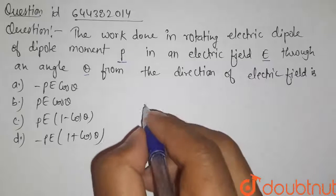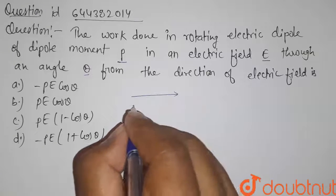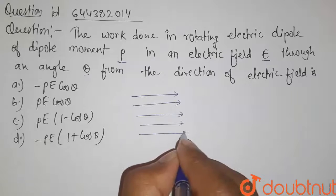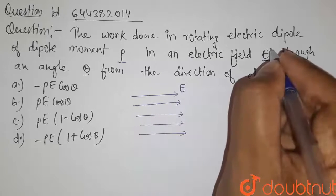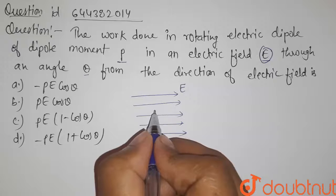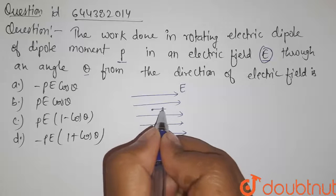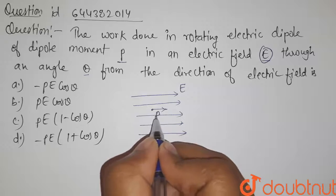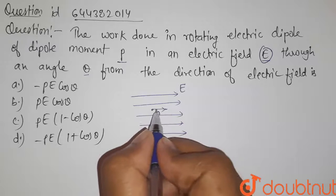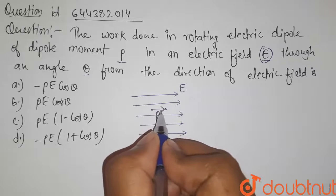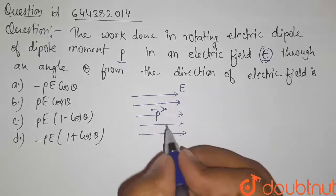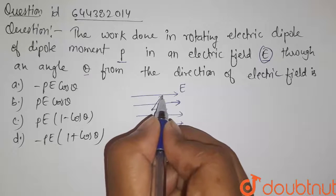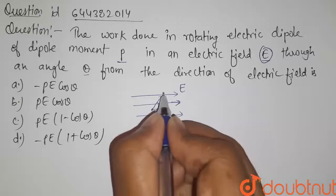So let us try to understand this. Suppose this is the direction of the external electric field, and its magnitude is given as E. We have a dipole placed in this electric field and its dipole moment is equal to p. Initially, the direction of dipole moment is the same as that of the electric field, and we have to find the work done in rotating this dipole by angle theta.